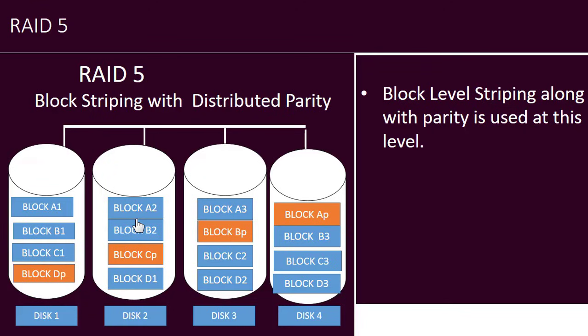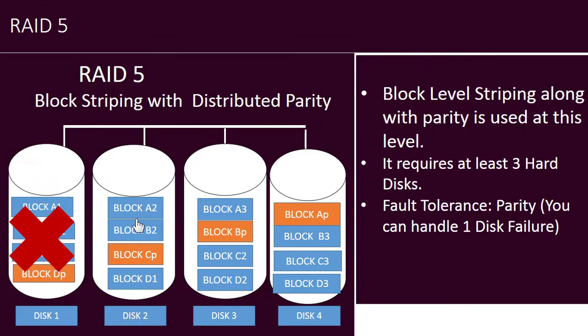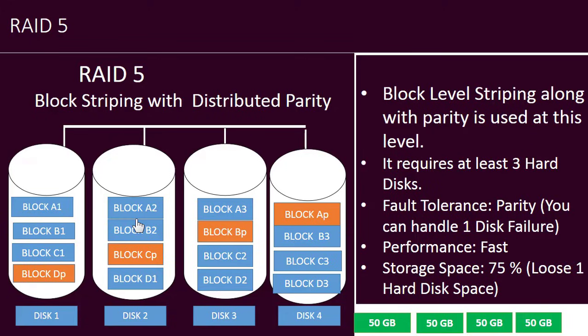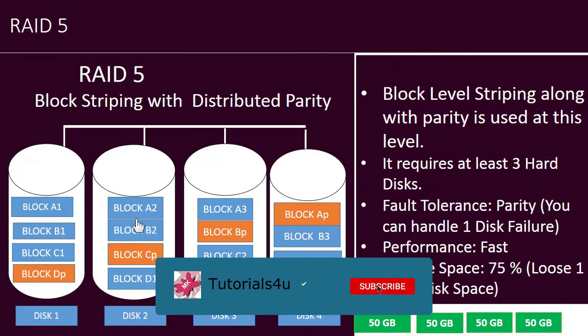RAID Level 5 uses block striping, but the major difference is that parity is distributed among several hard drives, as shown in the diagram. If one hard drive fails, the remaining hard drives can help restore it. This level can handle one disk failure and provides fast performance. The disadvantage is that storage space can only be utilized up to 75 percent — one entire hard disk's worth is used for parity — and this level cannot handle two disk failures.